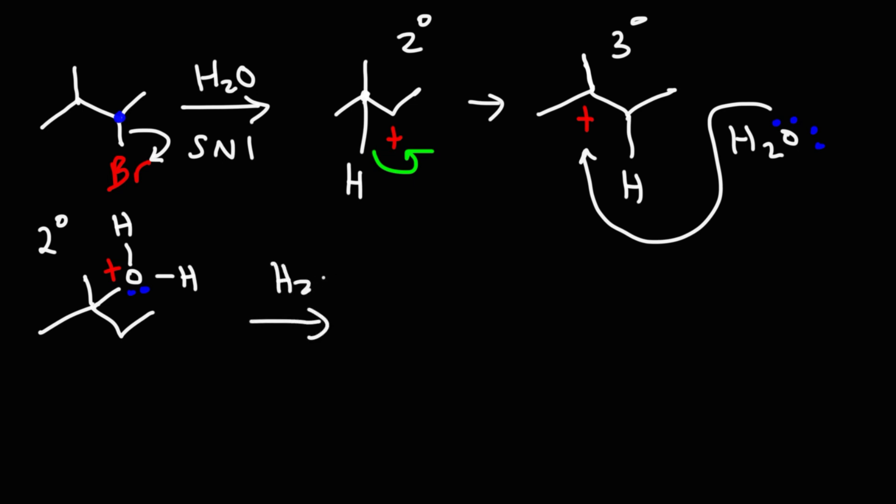In the next step, another water molecule is going to come to remove a proton, and the end result is that we're going to get a tertiary alcohol, particularly 2-methyl, 2-butanol. So that's going to be the major product for this particular example.